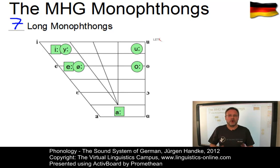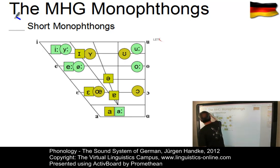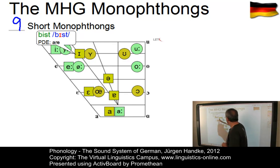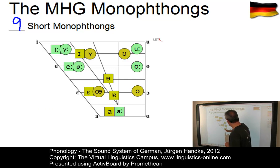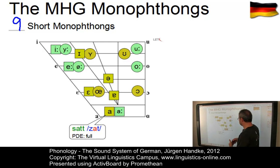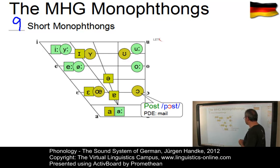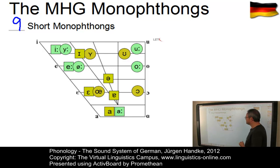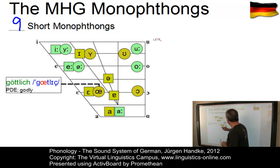Let us now add the short or lax monophthongs to the system of the long or tense ones. Here are the nine short monophthongs. We have a short i as in bist, a mid-low front vowel ä as in hätte, a low central vowel which is shorter than the other one — Satt — so there is a contrast between Satt and Saat. Here is the mid-low back vowel o as in Post, a short u as in Bus, and again two rounded front vowels: the short ü as in Hülle and the short ö as in göttlich.